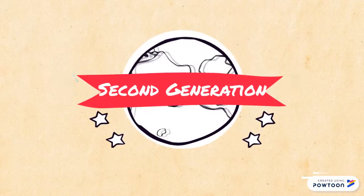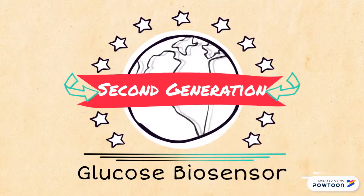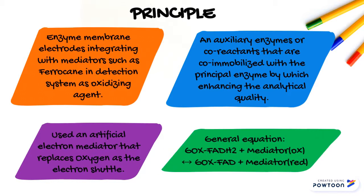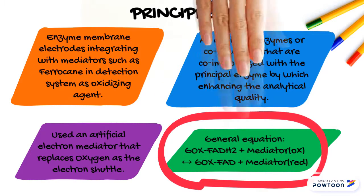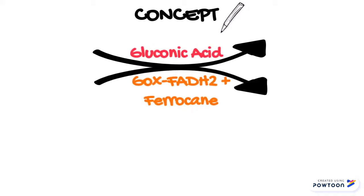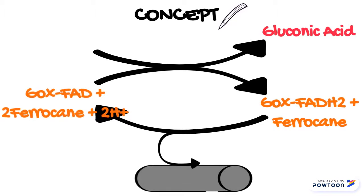Moving on to the second generation glucose biosensor. The principles are: first, enzyme membrane electrodes integrating with mediators such as ferrocene in the detection system as oxidizing agent. Second, an auxiliary enzyme or co-reactors that are co-immobilized with the principal enzyme, enhancing the analytical quality. Third, the system uses an artificial electron mediator that replaces oxygen as the electron shuttle. This is the concept of how glucose converts to gluconic acid in the presence of mediators, which is ferrocene.